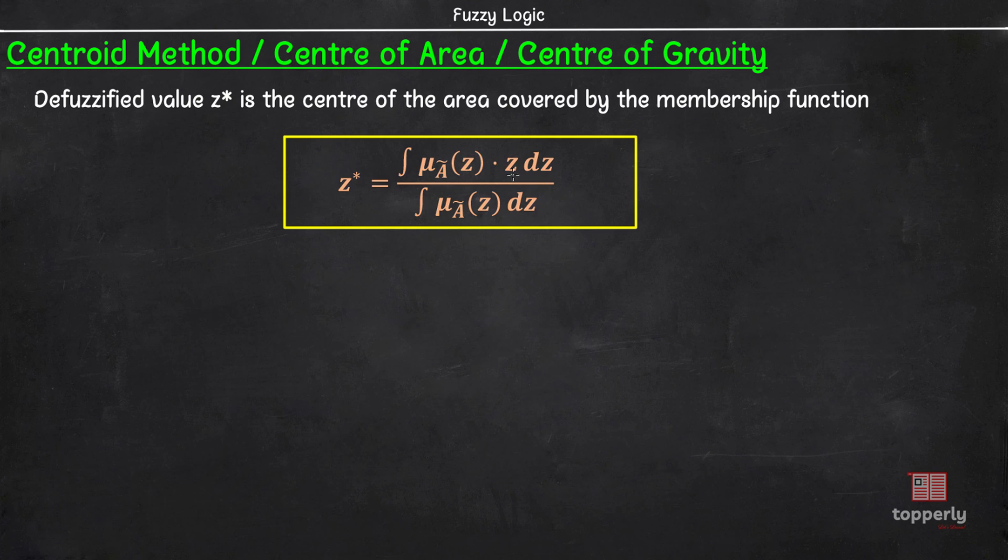To explain with an example, consider this fuzzy set A. To find the centroid, we need to know the equations of these lines. So let's mark the points A, B, C and D. Also, for the ease of calculation, I am substituting μ of z equal to y and z equal to x.